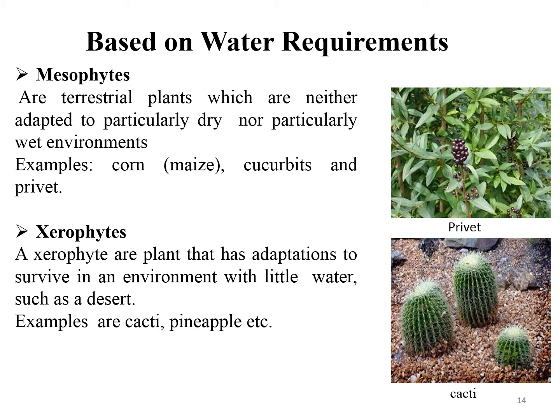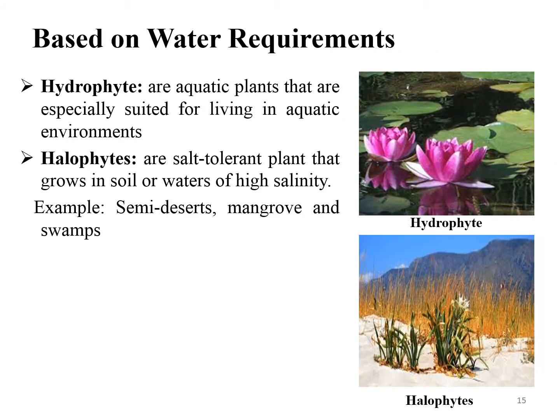Xerophytes are plants that have adaptations to survive in environments with little water, such as deserts. Popular examples of xerophytes are pineapple, cactus, and dragon fruit. Hydrophytes are aquatic plants especially suited for living in aquatic environments. Halophytes are salt-tolerant plants that grow in soil or water of high salinity. Plants are classified as glycophytes, which are salt-sensitive, and halophytes, which are salt-loving. Examples of halophytes are semi-desert plants, mangroves, and swamp plants.